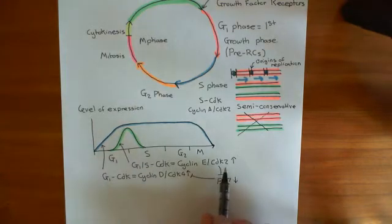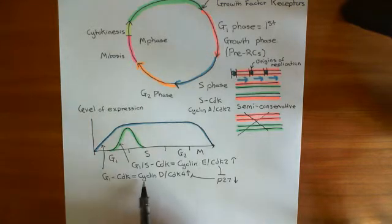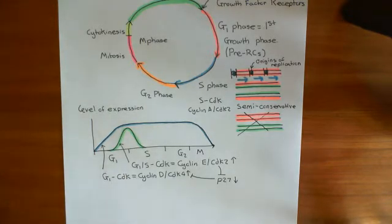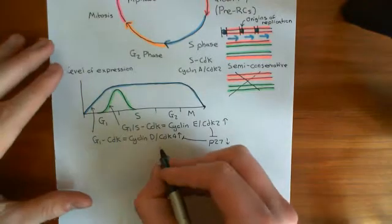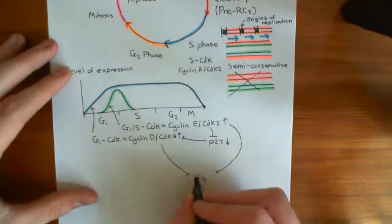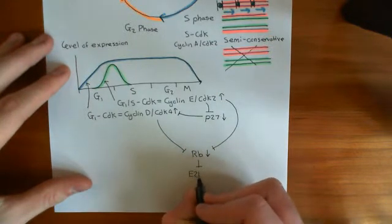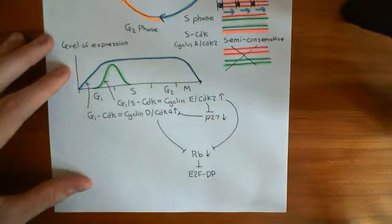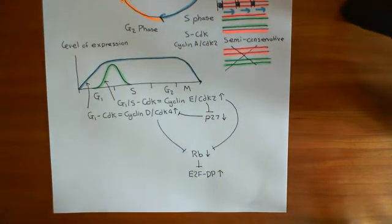Cyclin E-CDK2 complexes also directly phosphorylate the retinoblastoma protein, inhibiting it just like cyclin D-CDK4 does, changing its conformation so that it releases the E2F transcription factors with DP, causing the movement from G1 to S. When their levels go up, retinoblastoma's activity goes down, and since it sequesters E2F with its dimerization partner, E2F activity goes up, driving the transcription of cyclin A.